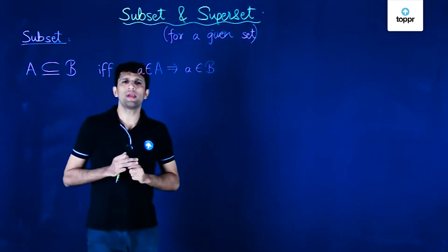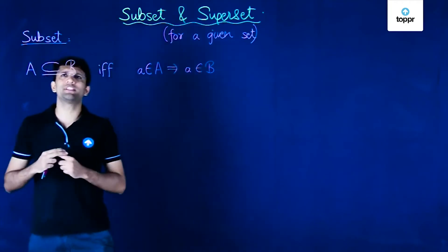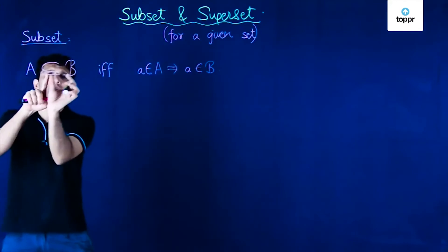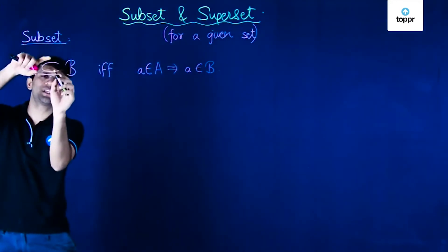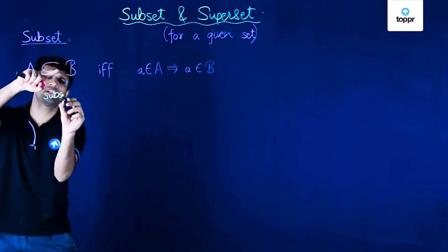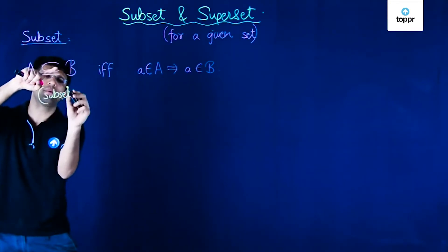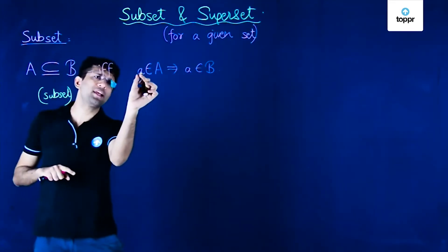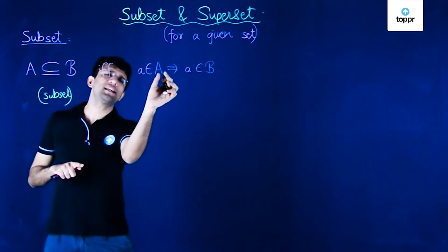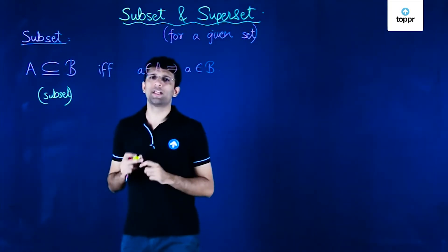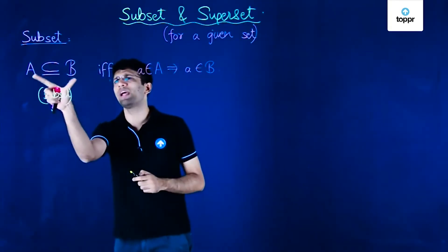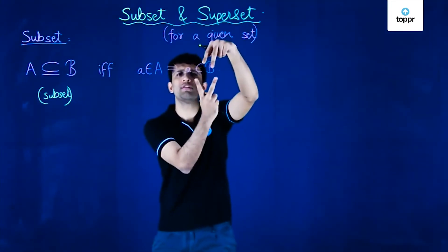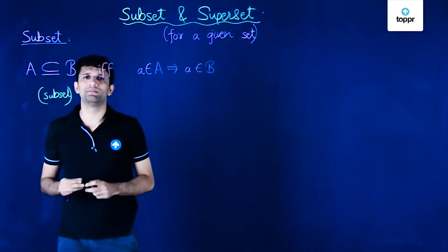So we have made a very simple statement which says that if we have two sets A and B such that set A is a subset — this notation here represents a subset — it means that A is a subset of B if and only if an element small a being an element of set A implies that a is also an element of B. In other words, every element of A is also an element of B, and then we say that A is a subset of B.